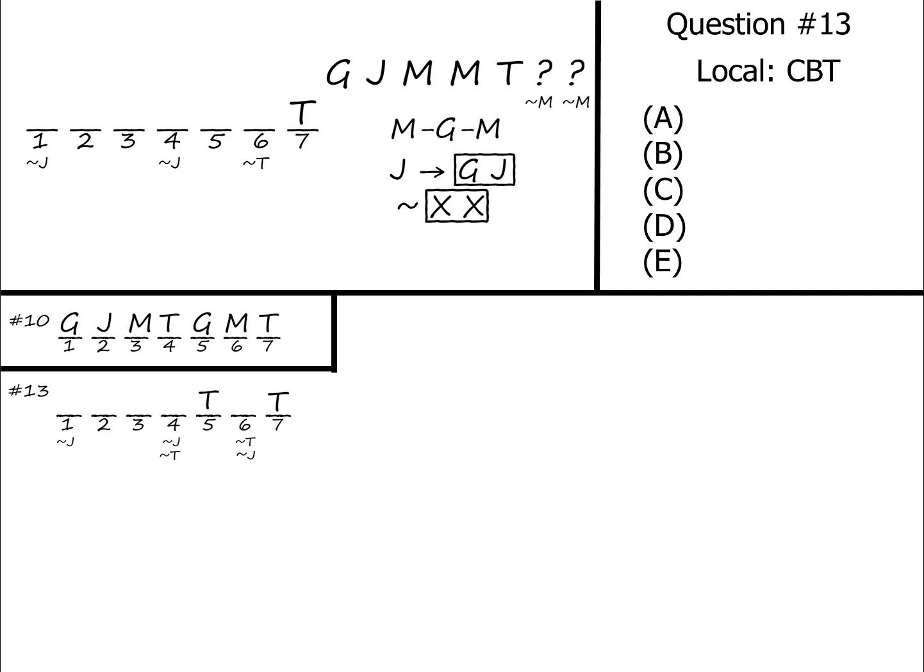Okay, so now we need to consider where our GJ block is going to go and that MGM chain where it's going to go. Now it's certainly possible to put the GJ block inside that chain. We have five spaces left to play within our sketch. We could try to keep that MGM chain separate from the GJ block. In other words, put G and J up front and then follow them up with MGM. Now in that scenario, that would be all five spaces. You'd have GJMGM.